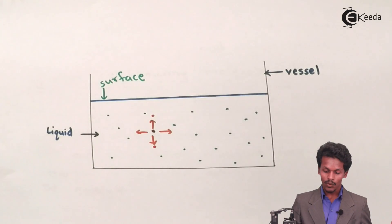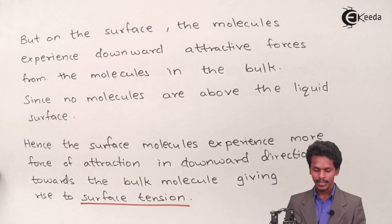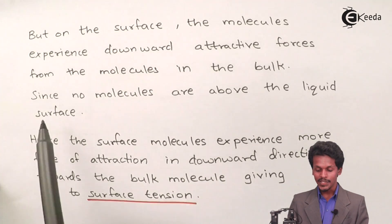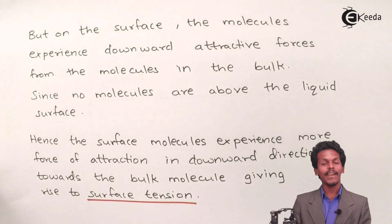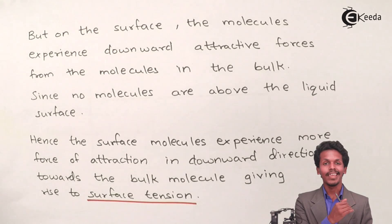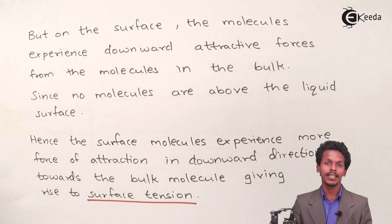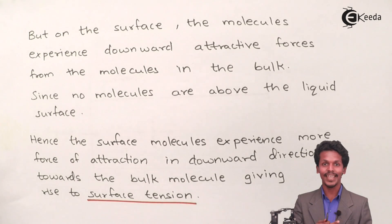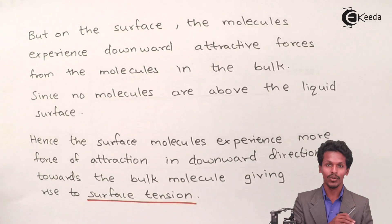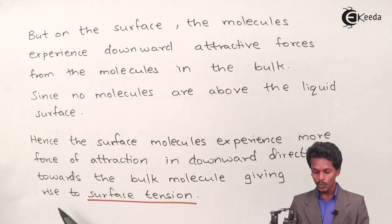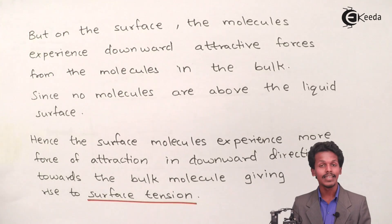On the surface, however, molecules experience a downward attractive force from the molecules present in the bulk. Since no molecules are above the liquid surface, surface molecules are attracted more in the downward direction — toward the bulk molecules. The force of attraction is therefore not equal in all directions as it was for bulk molecules, and this gives rise to the phenomenon of surface tension.